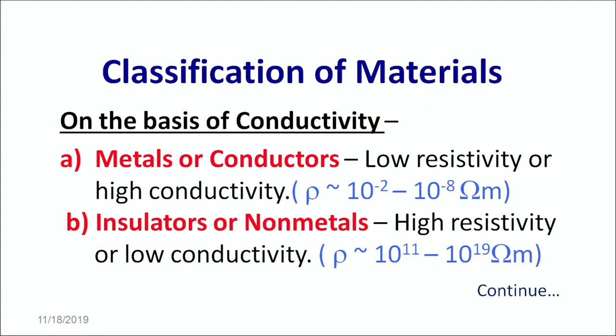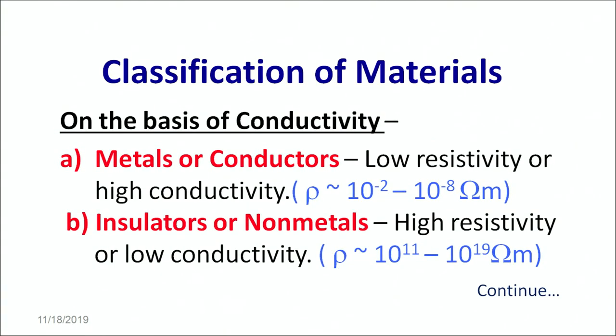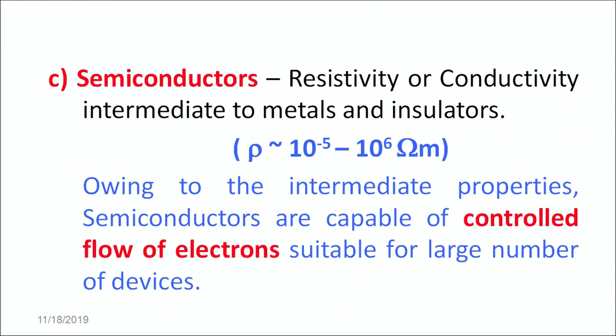Another class of materials are insulators or non-metals. These insulators or non-metals like boron, carbon, silicon — they have very high resistivity and low conductivity. The resistivity is of the order of 10 raised to the power 11 to 10 raised to the power 19 ohm-meters. The third class of materials which we are focusing on today are semiconductors. These have resistivity or conductivity lying intermediate to the metals and insulators.